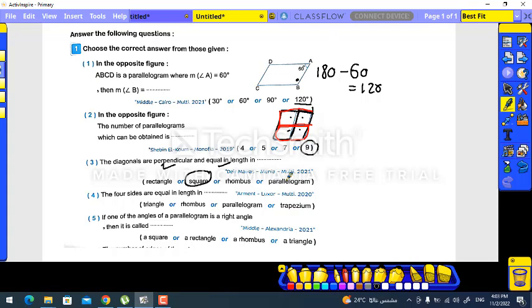The four sides are equal in length in: triangle, rhombus, parallelogram, or trapezium. Yes we know two shapes only have the same sides - rhombus and square. If one of the angles of a parallelogram is a right angle, it's called what? Yes, it's called a rectangle.